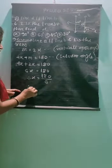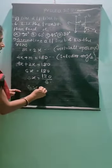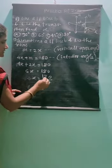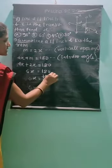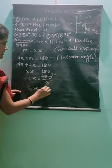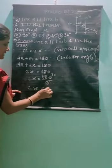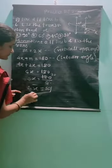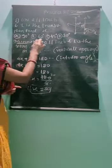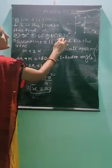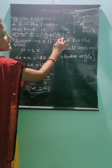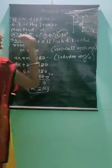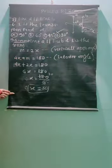We get the value of X as 30. Looking at the options, option D shows 30, so that is the correct answer.